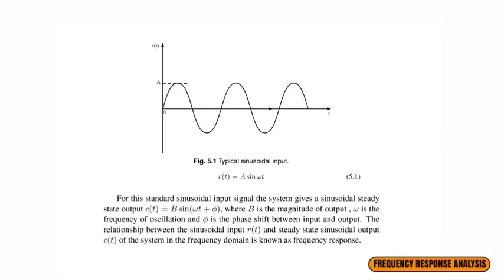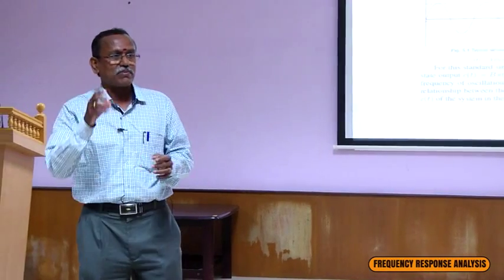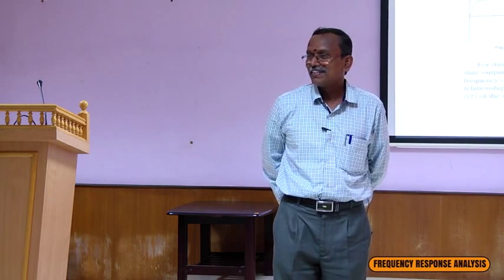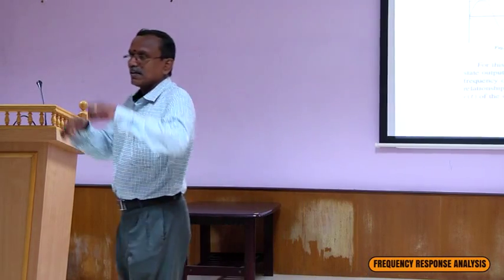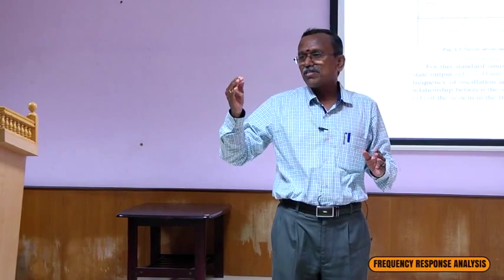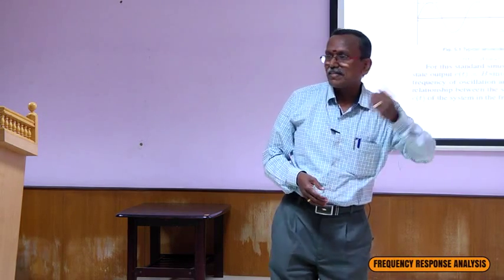Frequency response is obtained by varying the input frequency and measuring the steady-state output. In electronics lab, for a common emitter amplifier, you vary the frequency and find the steady-state output value for each frequency, then plot the magnitudes to get the frequency response — a trapezoidal-type waveform. If frequency goes beyond a certain value, amplitude diminishes; similarly if frequency decreases, amplitude also diminishes.